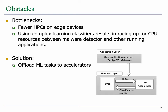However, compared to high-performance servers, edge devices host a much fewer number of HPCs. Therefore, constantly monitoring malicious and benign programs using a few HPCs and running ML models on low-end processing units of an edge device is not an efficient use of resources. In addition, adopting complex machine learning classifiers like neural networks could further exacerbate the situation, resulting in congestion and competition for CPU resources between malware detectors and other applications. A promising solution is to offload the complex ML processing to hardware accelerators.